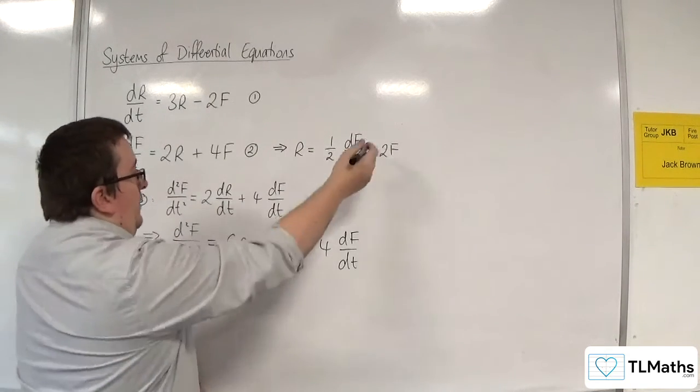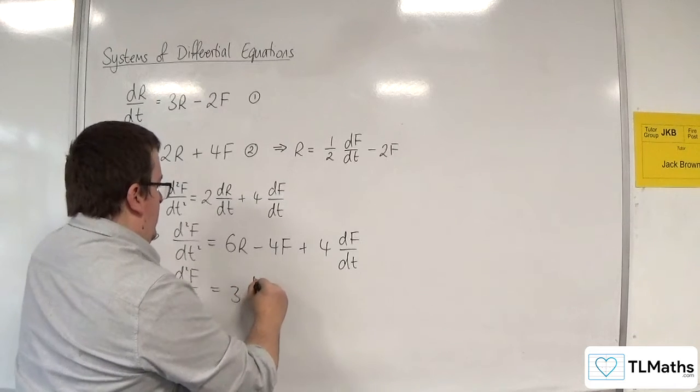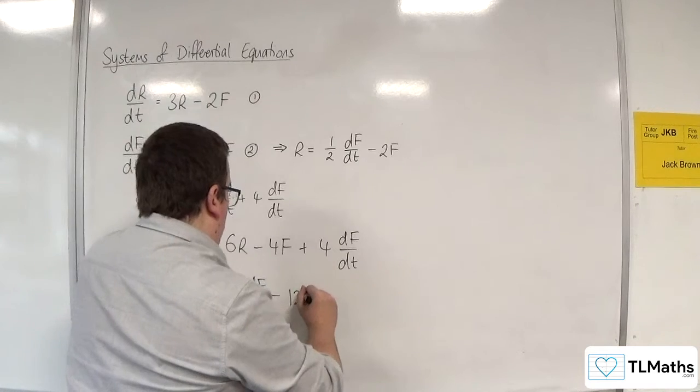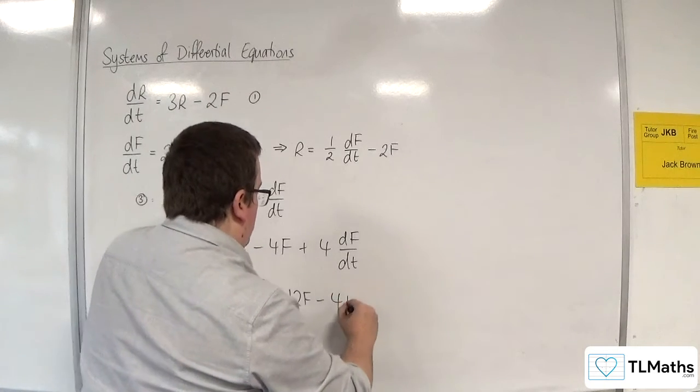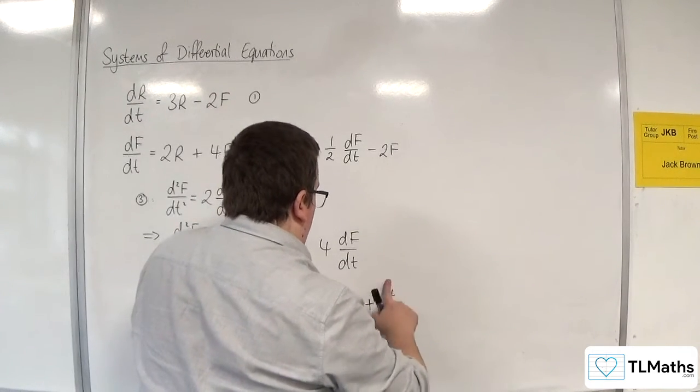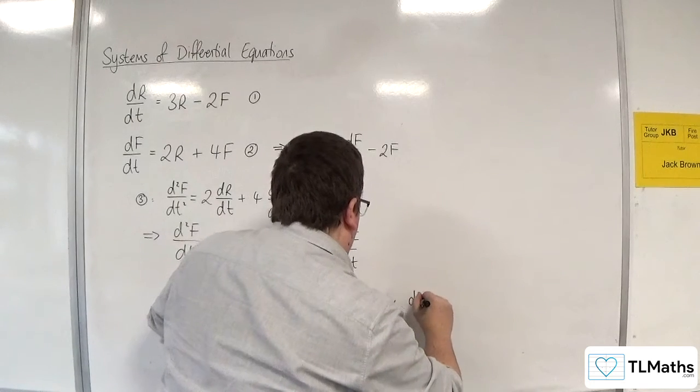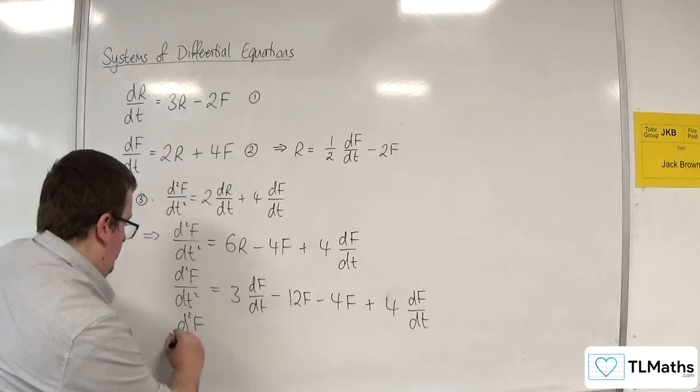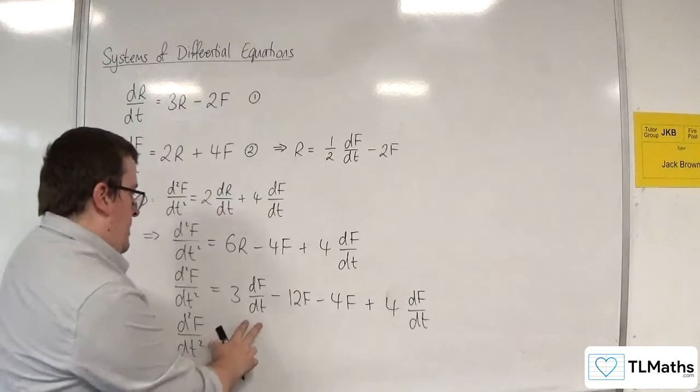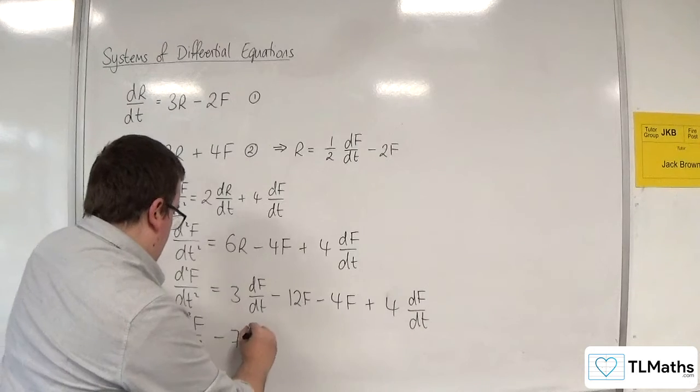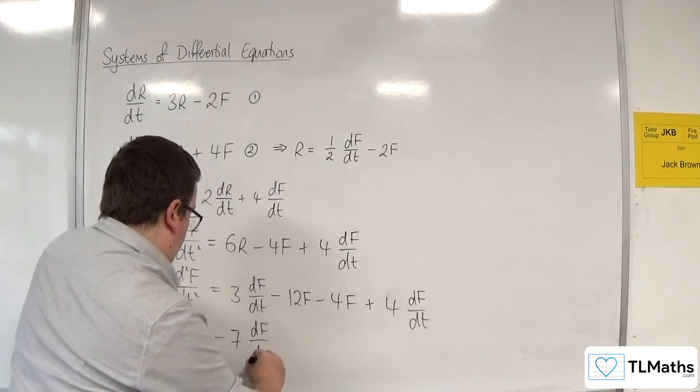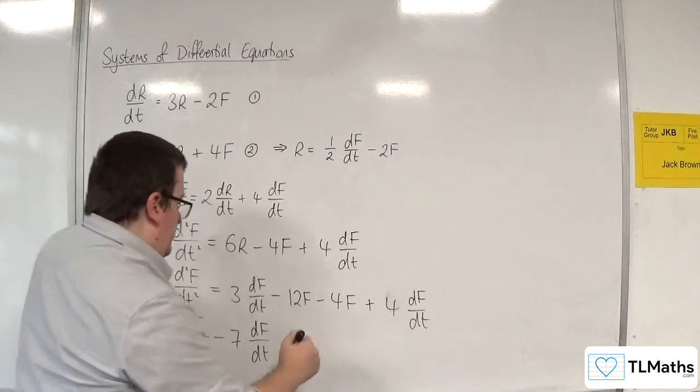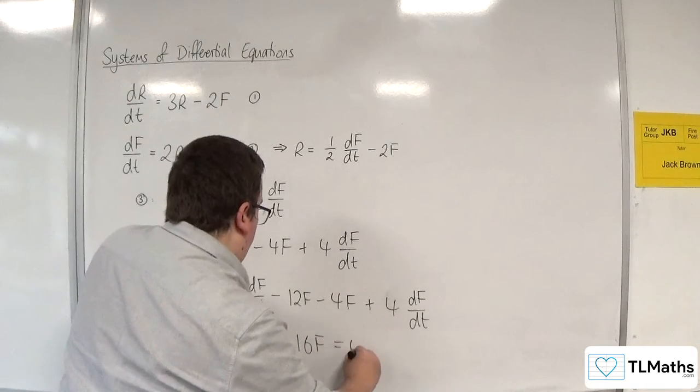So 6 lots of this would get me 3 dF/dt take away 12F. I've got the minus 4F there. I've got the 4 dF/dt. And then rearrange it. So I've got 3, 7, so take away 7 dF/dt. Then I've got the minus 12F. Take away 4F, so minus 16F, add 16F to both sides, is equal to 0.